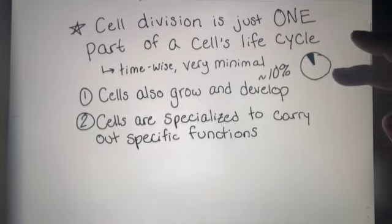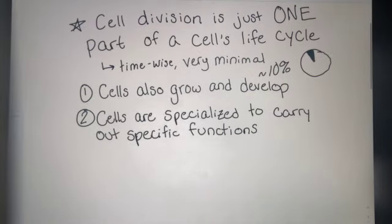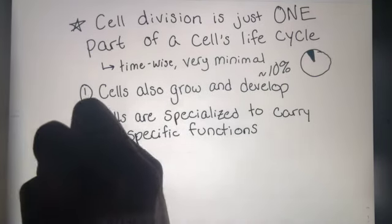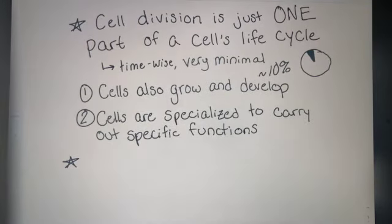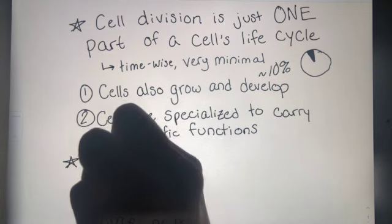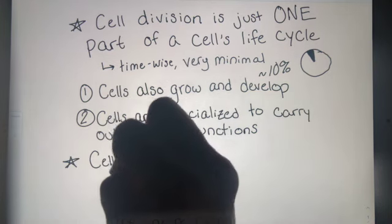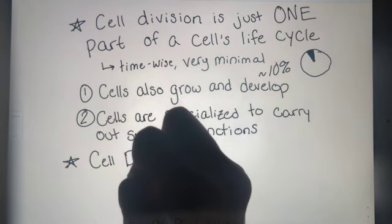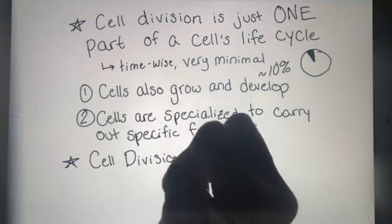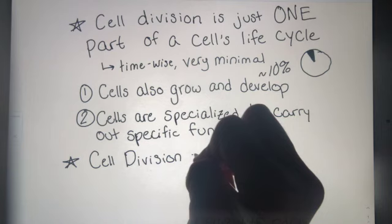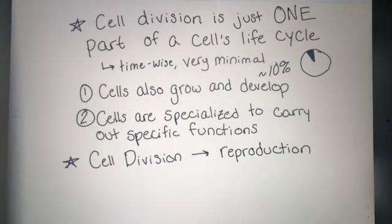Remember that all living things are made of cells and all cells have to come from cells — life comes from life. That's the idea of biogenesis that we talked about earlier. When a cell is dividing, it's reproducing.